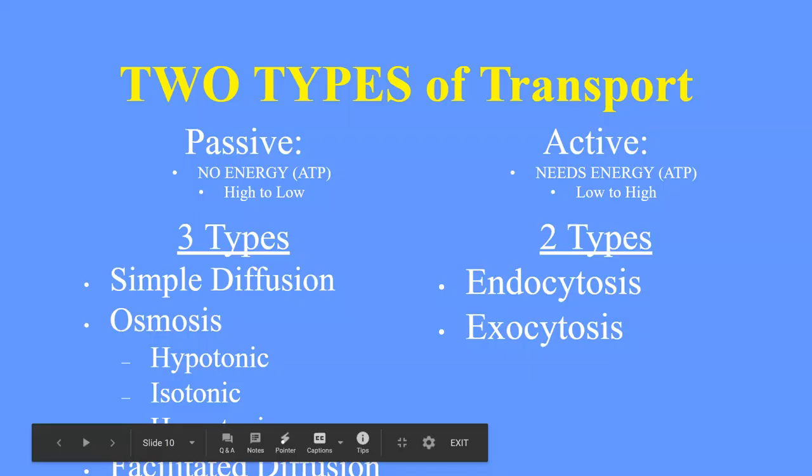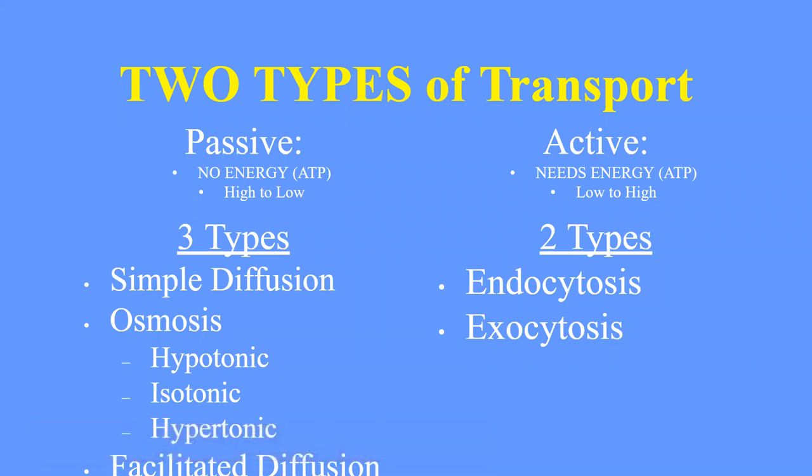So the two types of transport are passive and active transport. Passive transport requires no ATP, no energy, and moves from areas of high concentration to low concentration to achieve balance. Active transport needs ATP and moves molecules from low concentrations to high concentrations. The three types of passive transport are simple diffusion, osmosis, and facilitated diffusion. The two types of active transport are endocytosis and exocytosis.